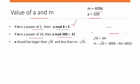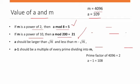It should be less than m minus square root of m, which is 4032. So 109 < 4032, and this condition is satisfied. Next, a minus 1 should be a multiple of every prime dividing into m.